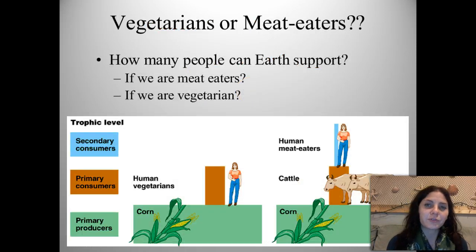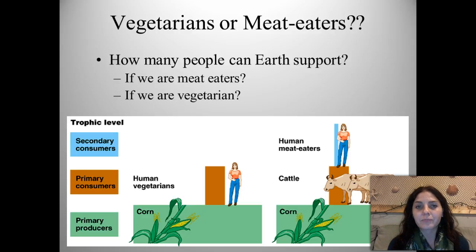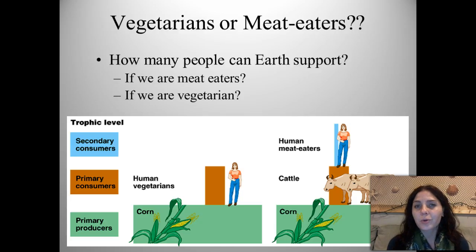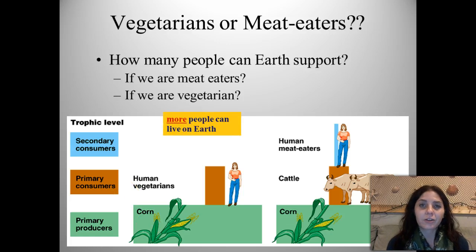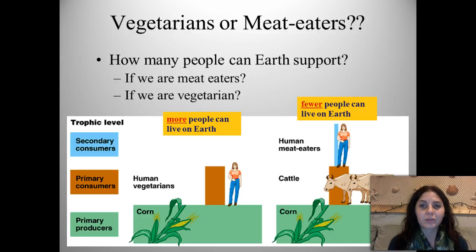Just a little food for thought: there's always debate about vegetarians and meat eaters and everybody's diet. So how many people can Earth support — if we're meat eaters or if we're vegetarian? If everybody was a vegetarian, we wouldn't need as much substance, meaning we wouldn't be as high up on the food chain. It would take less to support us. More people can live on Earth if we were all vegetarians versus fewer people if we were all carnivores. I hope that was helpful and I'll see you guys next time.